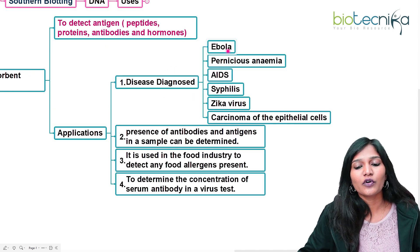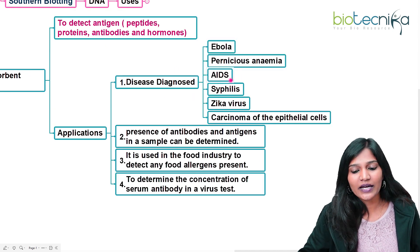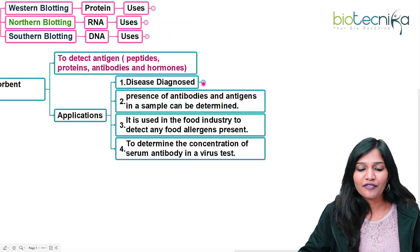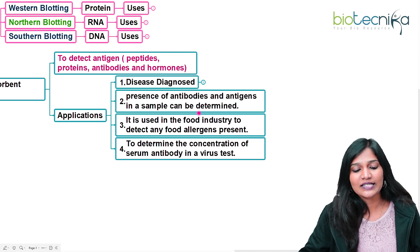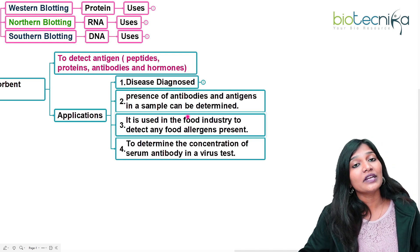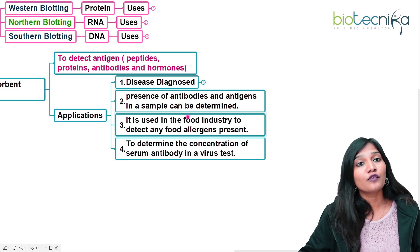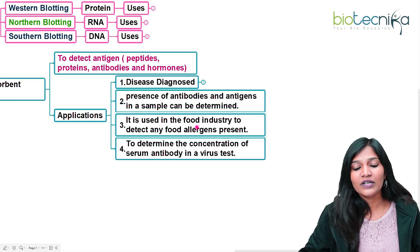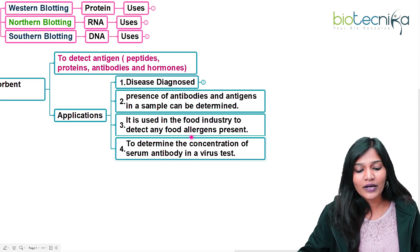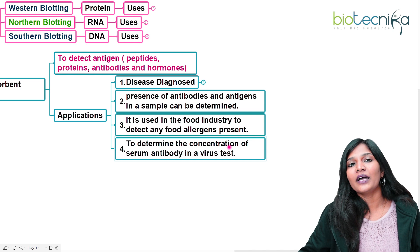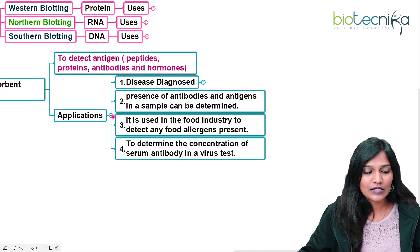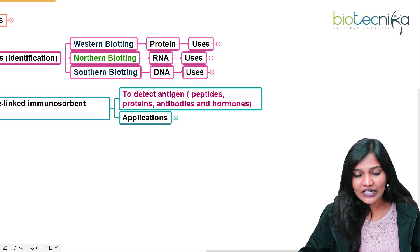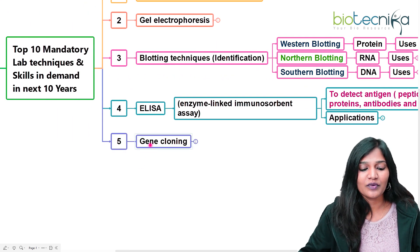ELISA is used in disease diagnosis for Ebola, pernicious anemia, AIDS, Zika virus, and carcinoma. You can also use it to detect antibodies and antigens in a sample. It is also used in the food technology sector to detect food allergens, and to find out the concentration of antibodies in virus testing. ELISA is a must-know technique.